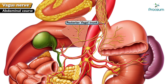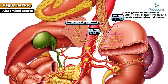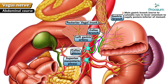The posterior vagal trunk gives rise to gastric and celiac branches. The main gastric branch, known as the nerve of Latarjet, runs in the lesser omentum to supply the posterior inferior part of the stomach. Celiac branches pass around the left gastric artery and join with the celiac and superior mesenteric plexus to supply the abdominal organs.